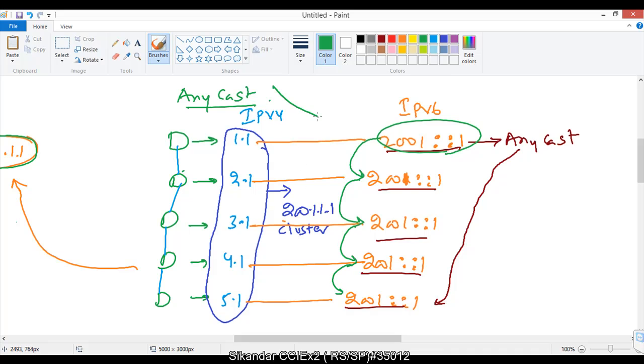Now if a packet comes for 2001, let's say to this router, the router will look for the nearest server or nearest 2001. It has information about all of these, so it is going to forward the packet to the nearest 2001 server.